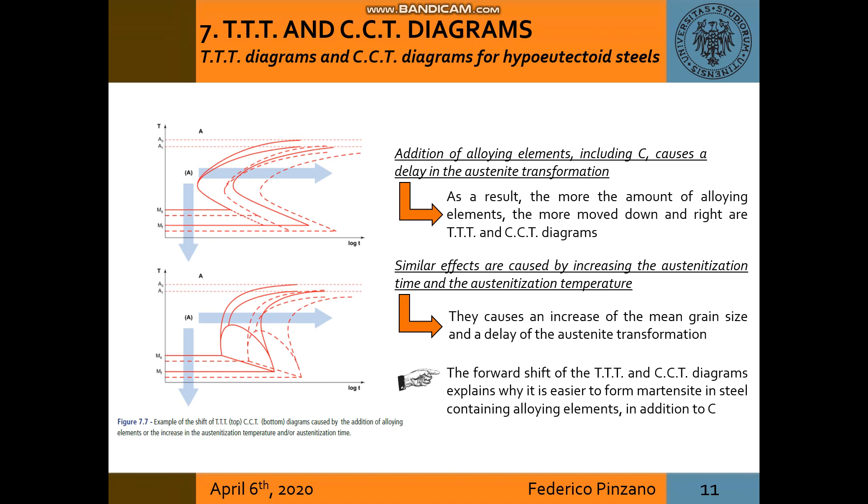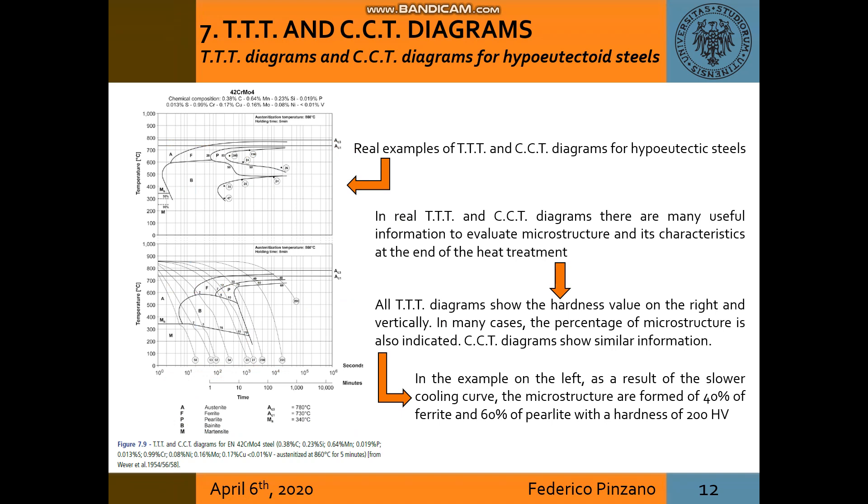The addition of alloying elements causes a delay in the austenite transformation and the same effect is caused by increasing the austenization time and the austenization temperature. As a result, the more amount of alloying elements, the more move down and right the TTT and CCT diagrams. Here there are some examples, some real examples of TTT and CCT diagrams.